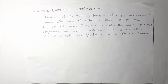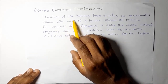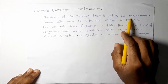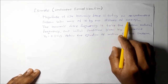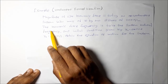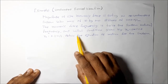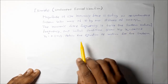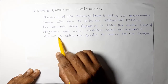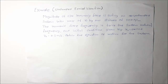In this problem, the magnitude of the 23 Newton harmonic force is acting on an undamped system with a mass of 10 kilograms and stiffness of 1000 Newton per meter. The harmonic force frequency is twice the system natural frequency, and the initial conditions are given by x₀ = 0 meters and v₀ = 0.2 meters per second. The objective is to obtain the equation of motion for the system.